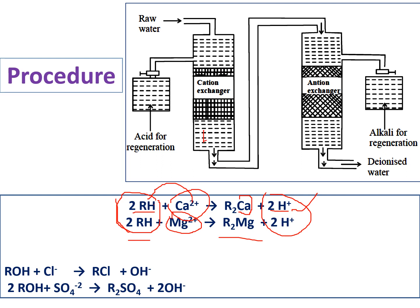This water is then passed to the next tank. Cl⁻ or other anions are replaced by OH⁻ ions, forming RCl, and OH⁻ ions are released. H⁺ ions and OH⁻ ions combine to form water molecules. Over time, the cation exchange resin converts to R₂Ca or R₂Mg, and the anion exchange resin (ROH) converts to RCl or R₂SO₄. This is called exhaustion.